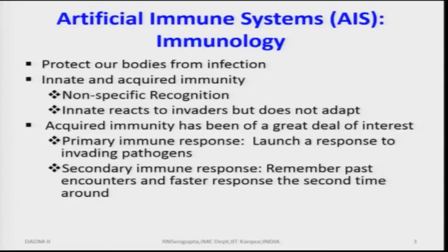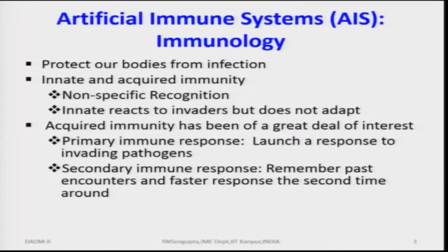Innate immunity works on non-specific recognition — the fighting system does not know what type of attacker is coming and must learn in the process to deactivate external germs. Some innate cells react to invaders but do not adapt; they fight as-is and either kill the germs or are killed in the process. The acquired immunity, both primary and secondary, has been of great interest: the primary immune response launches a response to the invading pathogens.